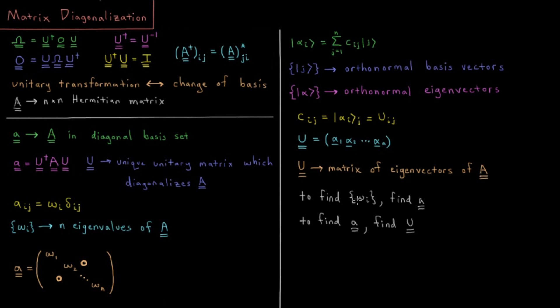So if we want to find the eigenvalues, we find the diagonal representation. If we want to find the diagonal representation, we find the unitary matrix which diagonalizes A. And the unitary matrix which diagonalizes A is actually the eigenvectors of A.